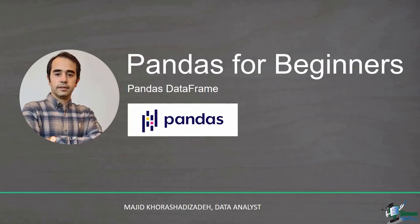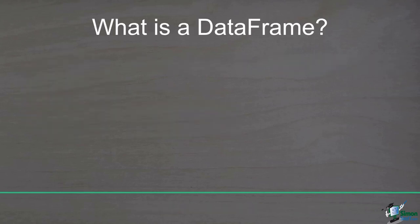A Pandas DataFrame is the second primary data structure in Pandas — it's a tabular data structure that stores data in the form of rows and columns. Like other tabular data such as spreadsheets or SQL tables, in a Pandas DataFrame rows correspond to data records while columns refer to attributes. Later you will see that a Pandas DataFrame is nothing but a collection of Series.